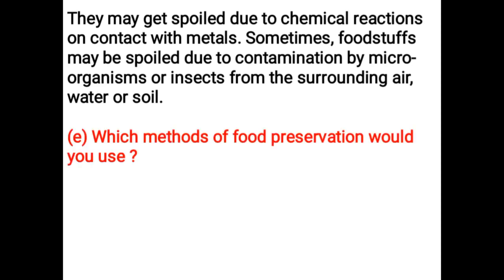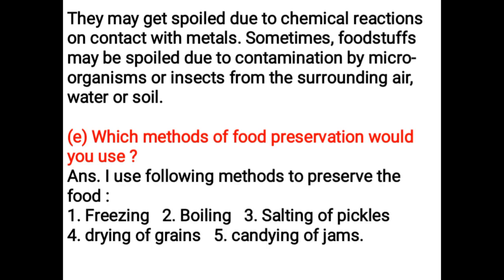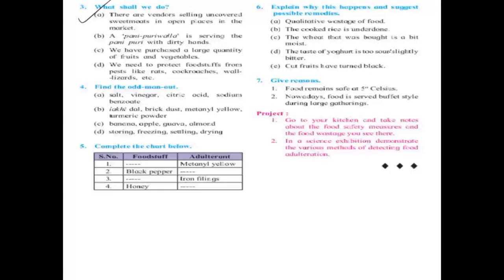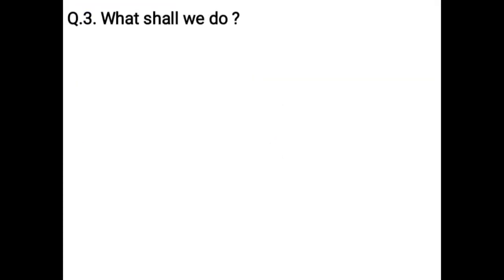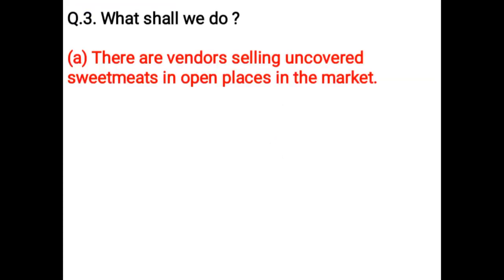Sometimes foodstuffs may be spoiled due to contamination by microorganisms or insects from the surrounding air, water, or soil. Which methods of food preservation would you use? I would use the following methods: freezing, boiling, storing pickles, drying of grains, and canning of jams.